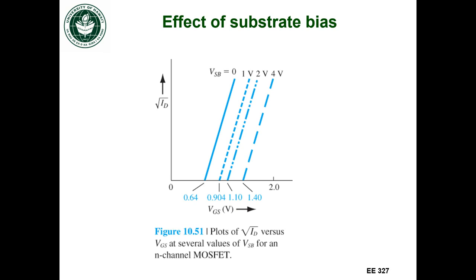So initially, let's pick a particular VGS. Okay, so let's pick 1.1 volts as the VGS. So if I applied 1.1 volts between the gate and the source, and I wanted to figure out what my drain current would be, or the square root of my drain current.